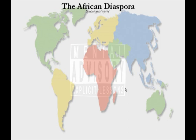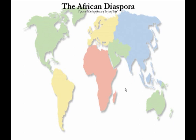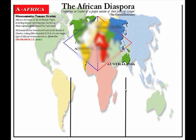This is one of my favorite parts, because the amount of information there is about the African diaspora is vast. Let's first define this. The term diaspora is a dispersion or scatter of a people outside of their place of origin.